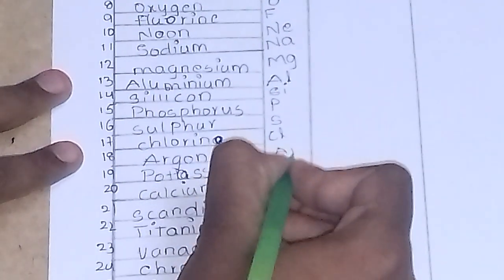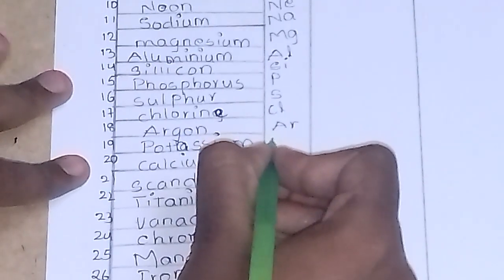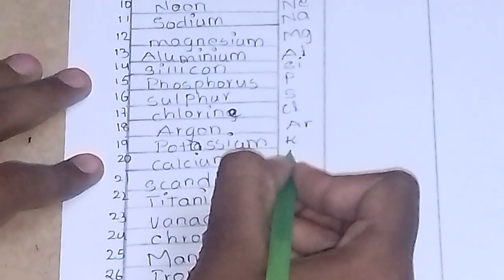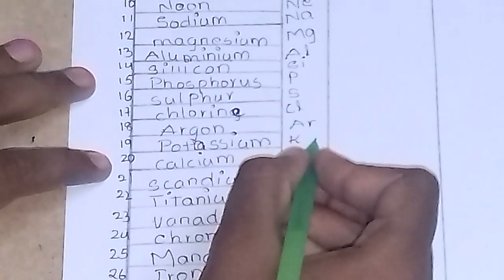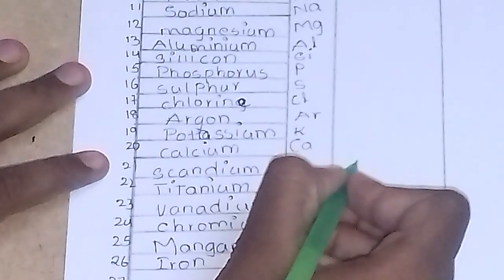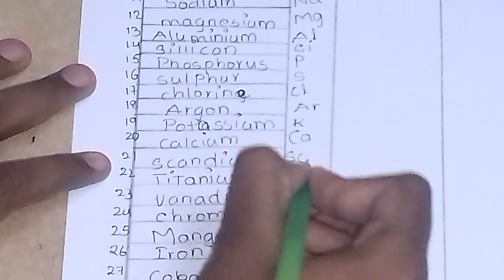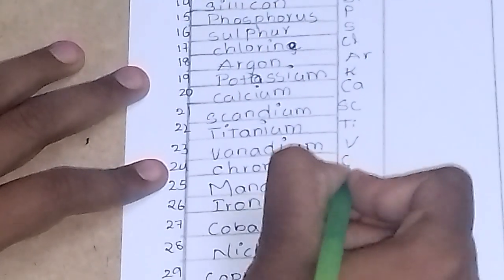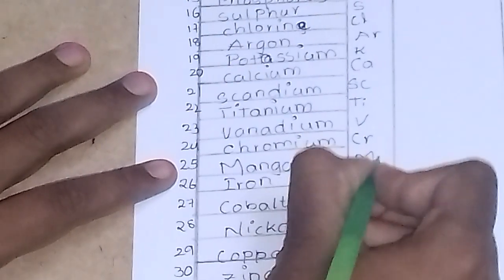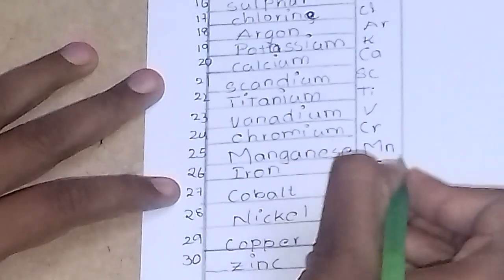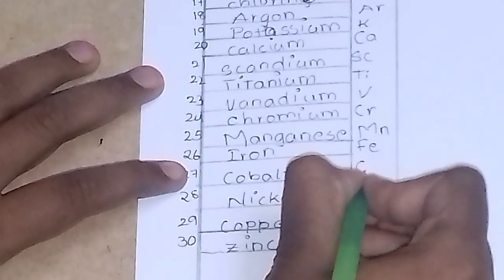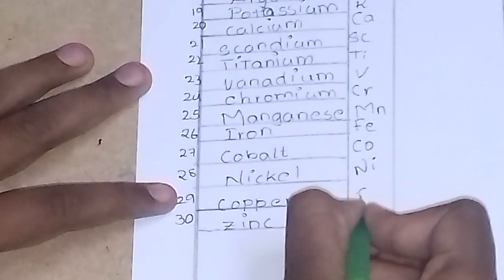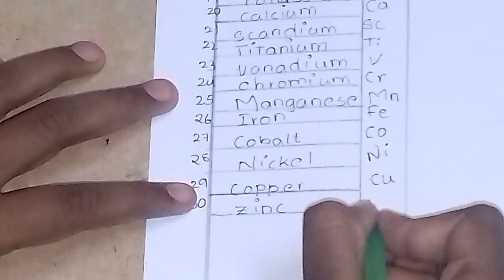Chlorine, CL. Argon, AR. Potassium, it is known as kalium, so it is K. The 20th one is calcium, CA. 21st scandium, SC. Titanium, TI. Vanadium, V. Chromium, CR. Manganese, MN. Iron, it is known as ferrous, so it is FE. Cobalt, CO. Nickel, NI. Copper, CU. And the last one, zinc, it is ZN.